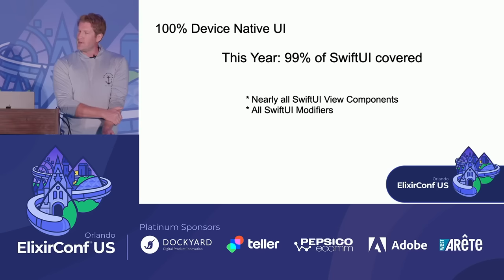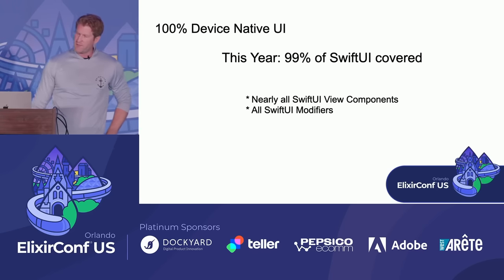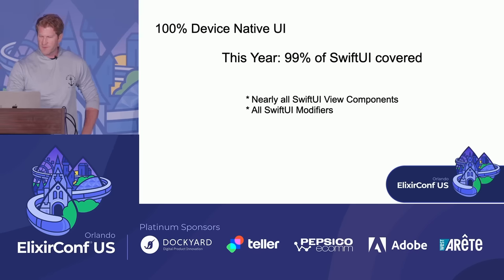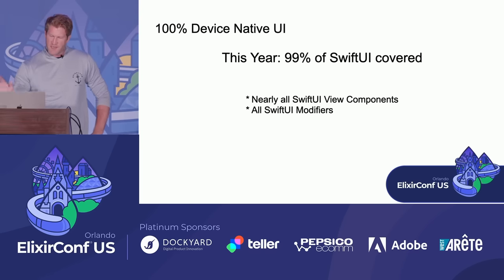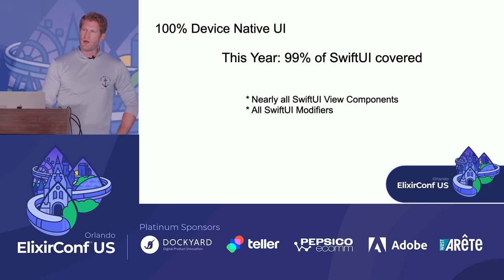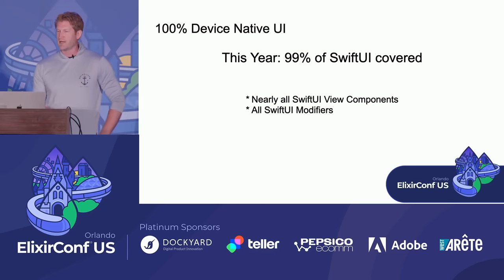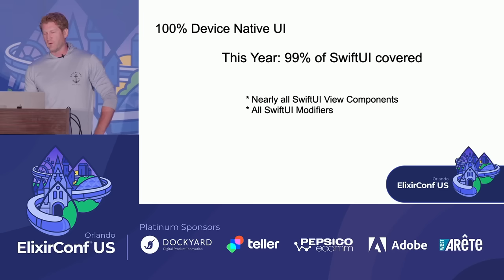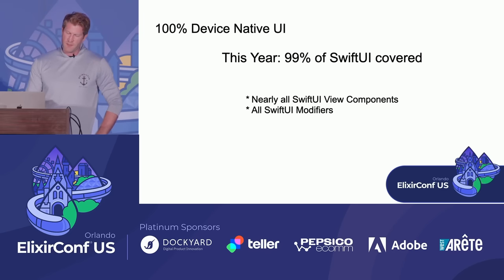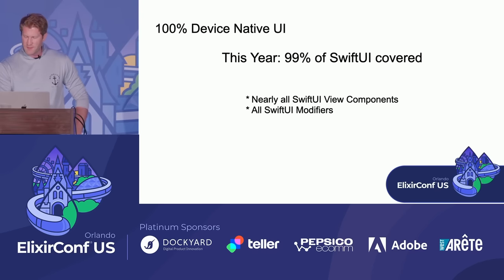It's 99%, not 100%, because there are simply some SwiftUI components and modifiers that don't make sense in a server-side rendered environment — it's not because we haven't gotten there yet. We've covered pretty much everything we can in SwiftUI itself — 99% of SwiftUI modifiers. When I say modifiers, this is how you style SwiftUI applications. They're not exactly the same as CSS styling classes — they go beyond the scope of what CSS does — but it's what we use to style, animate, and do a few other things in SwiftUI.